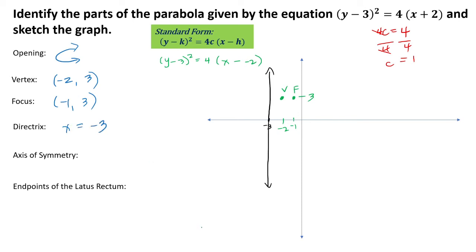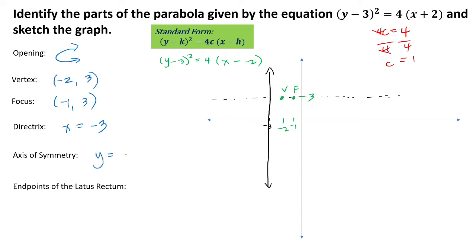For the axis of symmetry, it passes through our vertex and the focus, and is perpendicular to our y-axis. Therefore, the equation of our axis of symmetry is y equals 3.